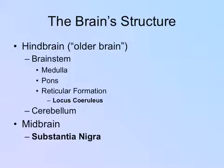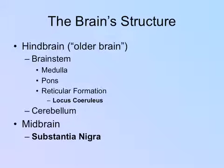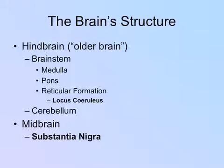Moving from bottom to top, we have the substantia nigra located in the midbrain — fancy Latin for 'black substance.' This section of the midbrain makes your movement smooth. For example, your eyes can follow a subject without you moving your whole head, and the movement within your eyes is a very fluid motion — that's an important function of the midbrain.